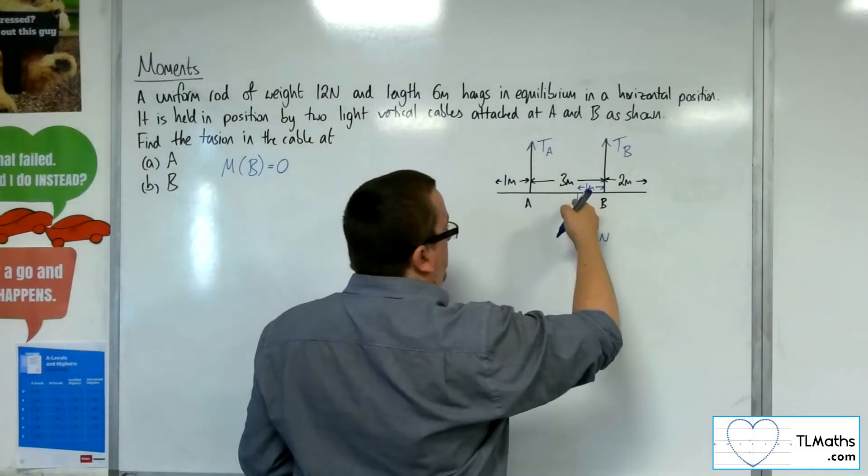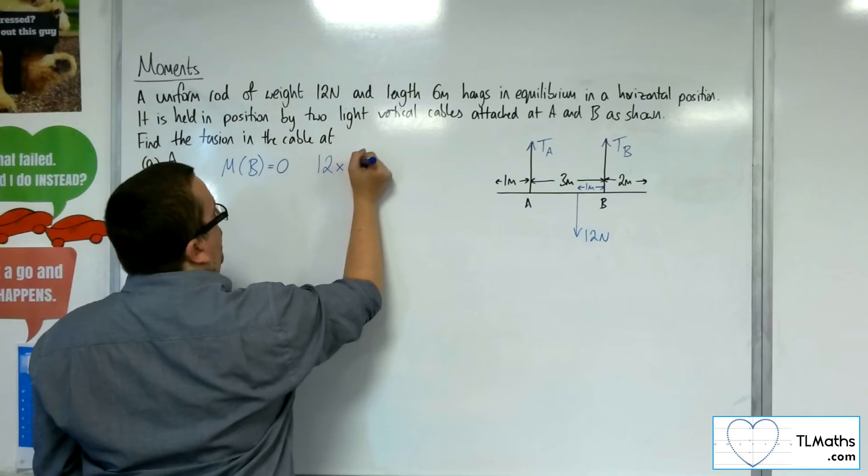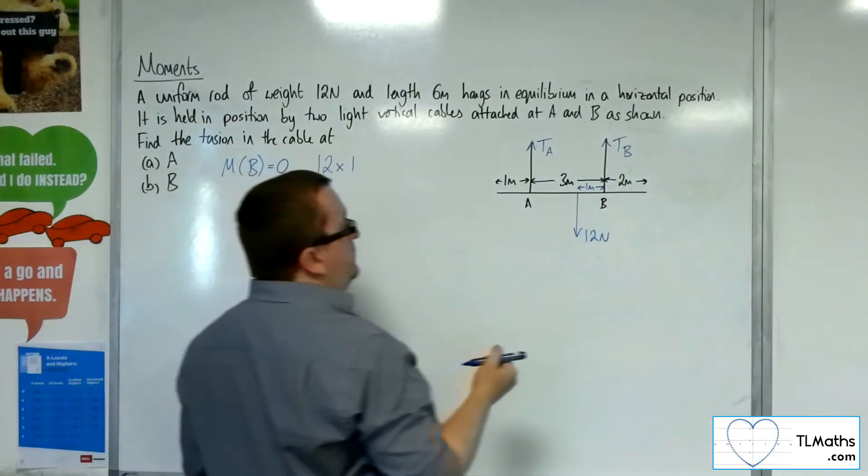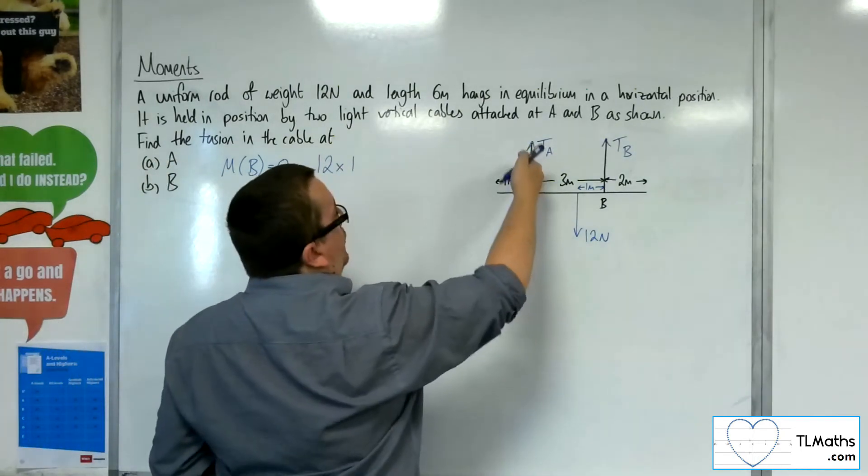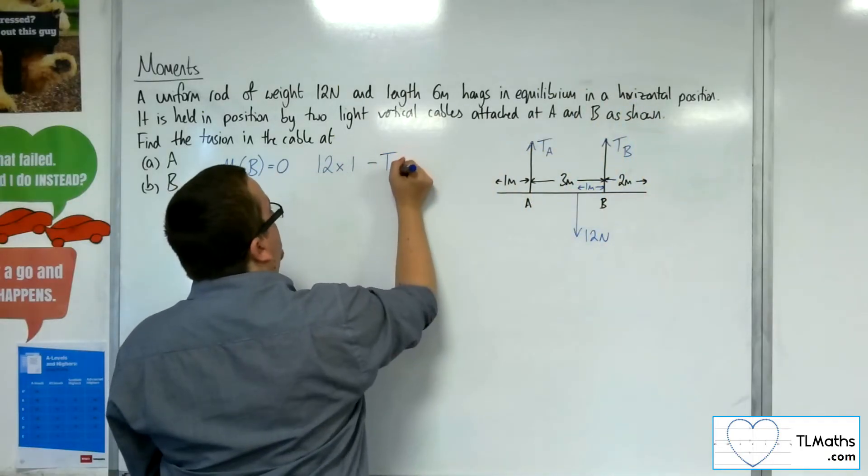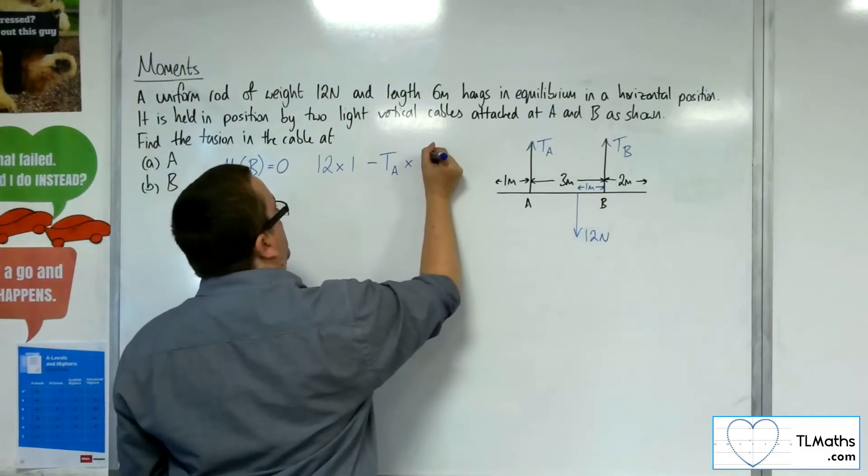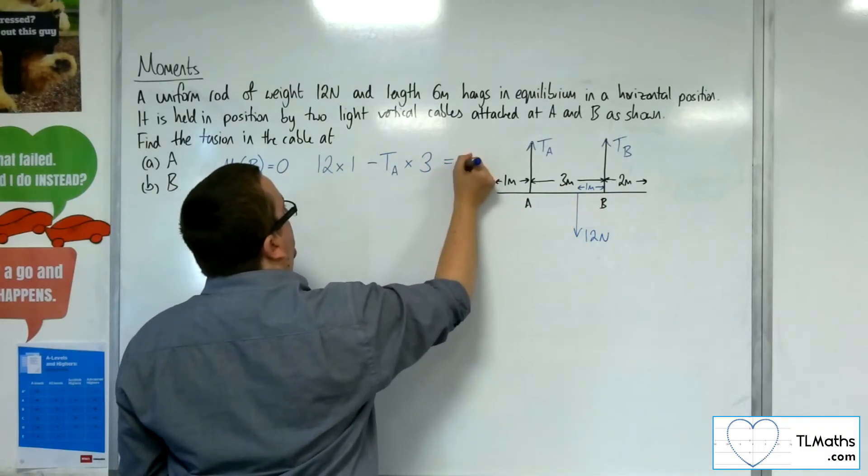Well, I've got the 12 newtons, which was working anti-clockwise, so that's positive. So I've got 12 lots of 1 meter away. And then I've got T_A, which is working clockwise, so take away T_A times 3 meters away from that point. And that's got to be 0.